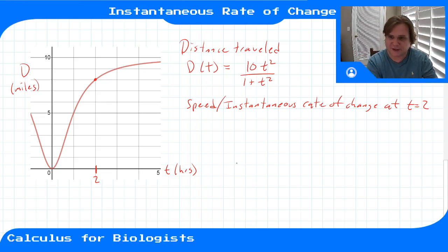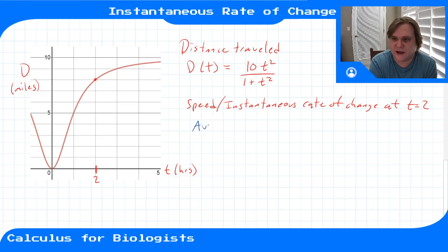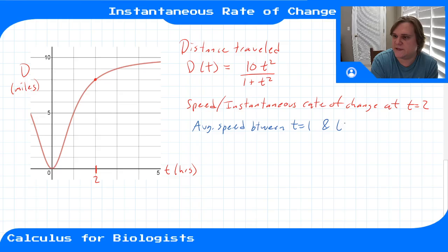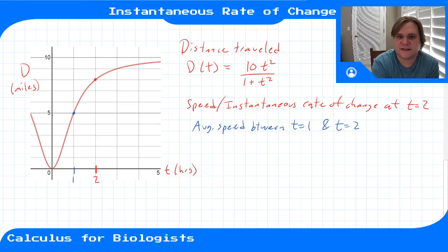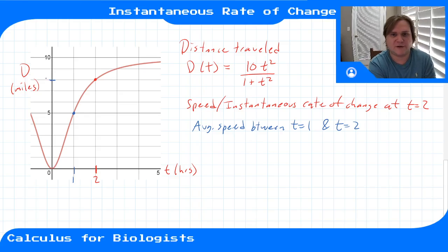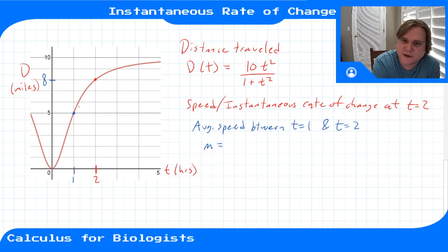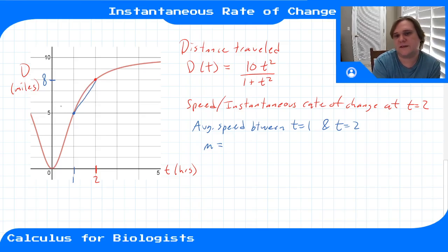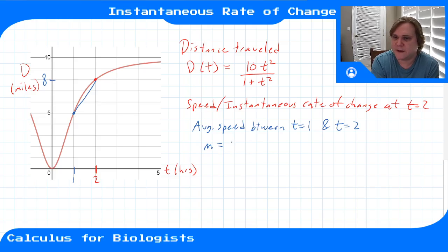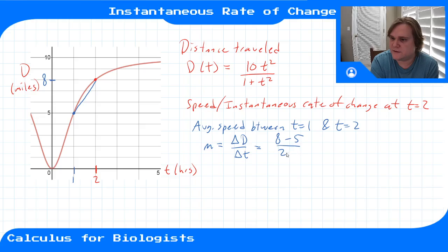We're going to have to do this approximation. We'll start by looking at the average speed between t = 1 and t = 2. At one hour, the distance traveled is 5, and at two hours it's 8. The slope of the secant line — Δd/Δt = (8 − 5) / (2 − 1) — gives me 3 over 1, or three miles per hour as the average speed over this time interval.